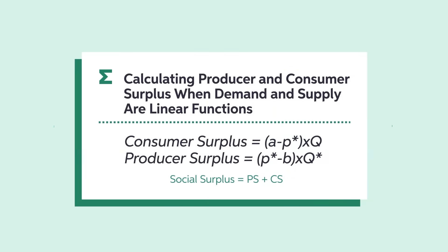When the supply and demand functions are linear, like in our example, you can compute the producer and consumer surplus by calculating the blue and orange triangles on the graph, respectively. Here you can see the formulas. The social surplus is the sum of the producer and consumer surplus.